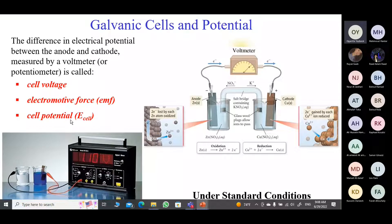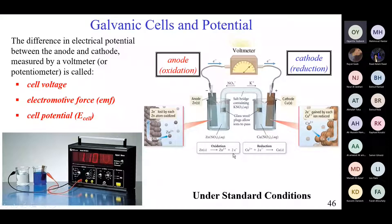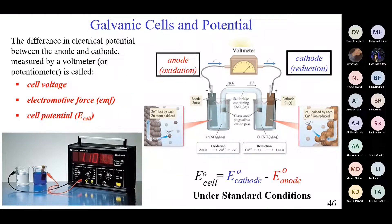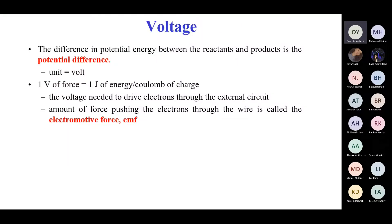We are going to measure it at what is called standard conditions, which means all solutions are one molar at 25 degrees Celsius. The anode is on the left-hand side and the cathode is on the right. The cell potential — we call it E-naught of the cell — is the potential at the cathode minus the potential at the anode. This is the potential difference, measured in volts, where one volt equals one joule of energy per coulomb of charge.